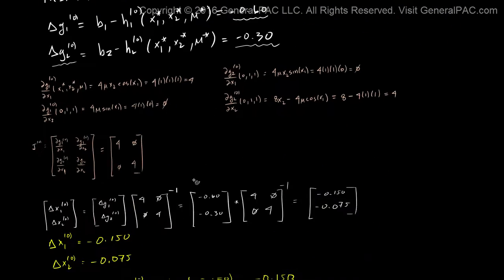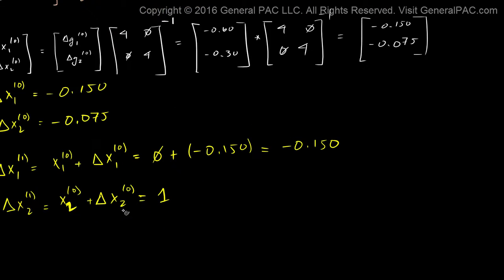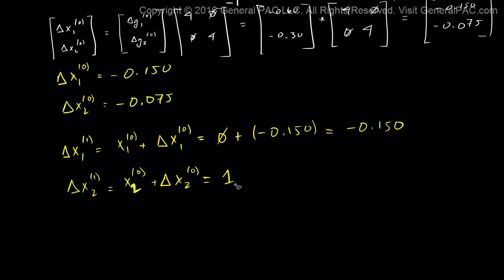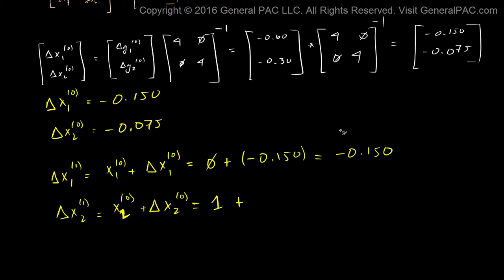x2 is equal to 1. So we know that x2 was equal to 1 plus now the change of x2, which is equal to negative 0.075. And that is going to equal 0.925.